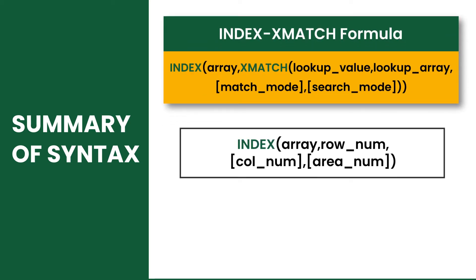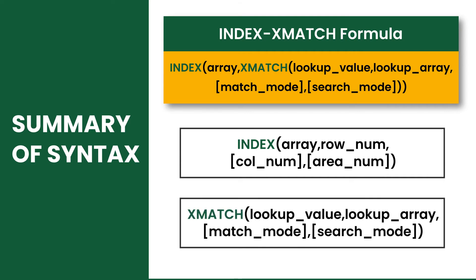The INDEX function runs on four arguments where the first two are required and the other two are optional, while the XMATCH function also runs on four arguments where the first two are required and the others are optional.